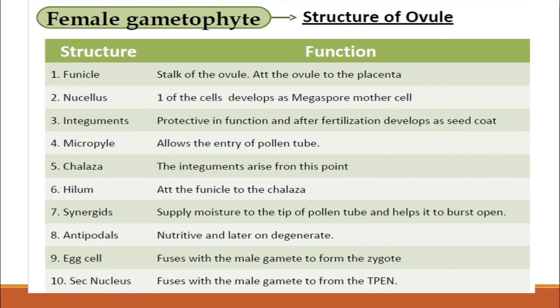This is the summary of the parts of the female gametophyte: the funicle is the point of attachment of the ovule to the placenta and the stock of the ovule; one of the cells of the nucellus develops into the megaspore mother cell. You can pause the video to read the summary contents, and then we will proceed to the last part of the lecture.